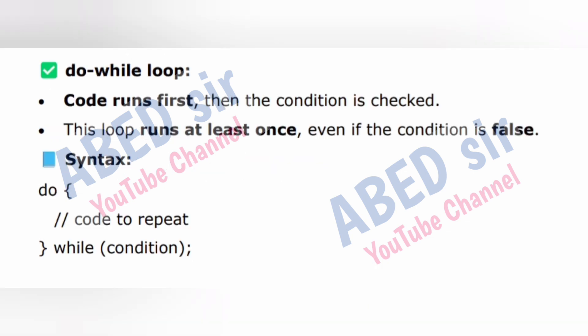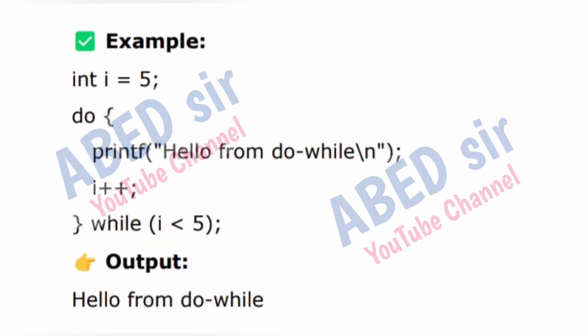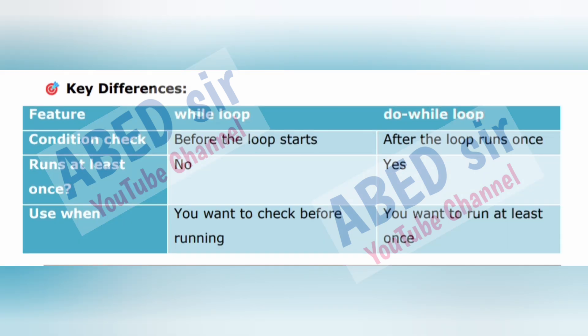Do-while loop: code runs first, then the condition is checked. This loop runs at least once, even if the condition is false. Syntax: do { code to repeat; } while (condition); Example: int i = 5; do { printf("Hello from do-while\n"); i++; } while (i < 5); Output: Hello from do-while. Key differences — feature / while loop / do-while loop: condition check: before the loop starts vs. after the loop runs once; runs at least once: no vs. yes; use when: you want to check before running vs. you want to run at least once.